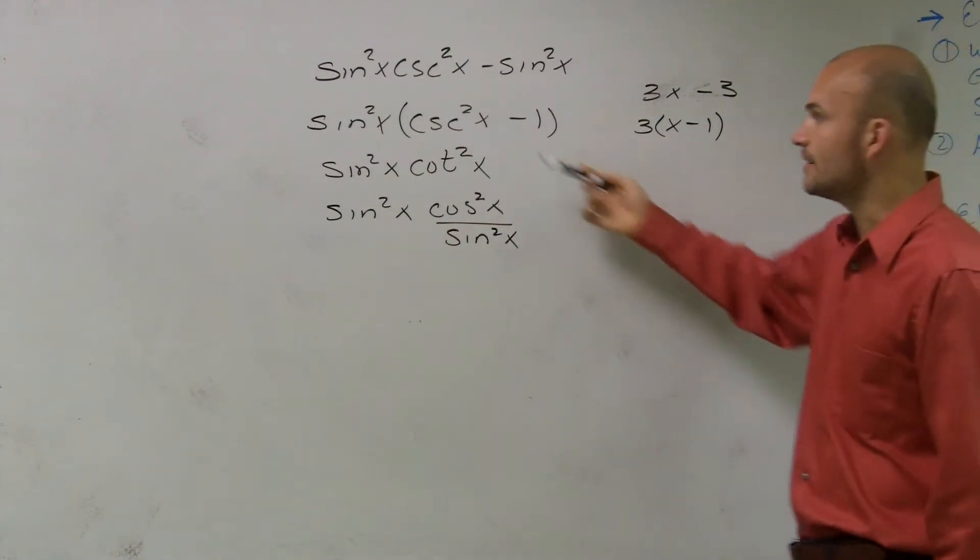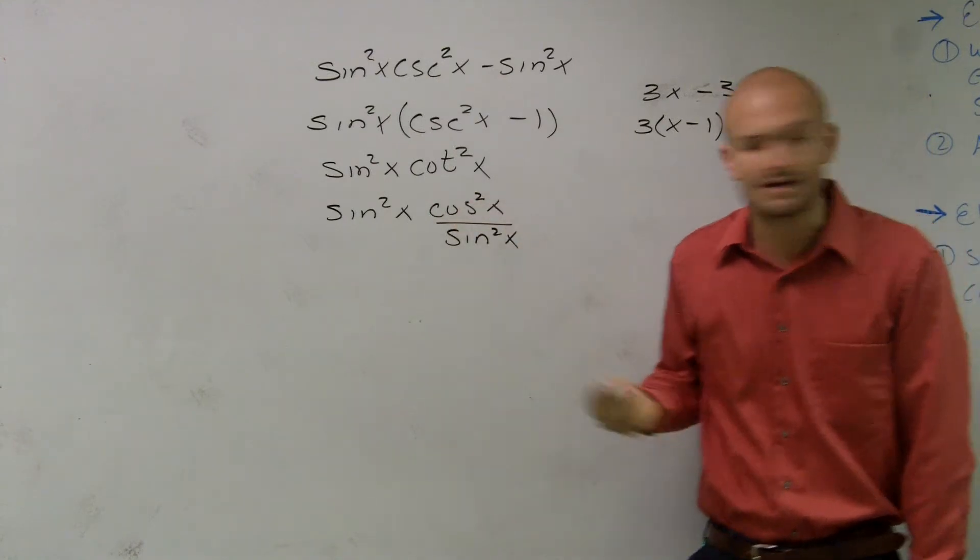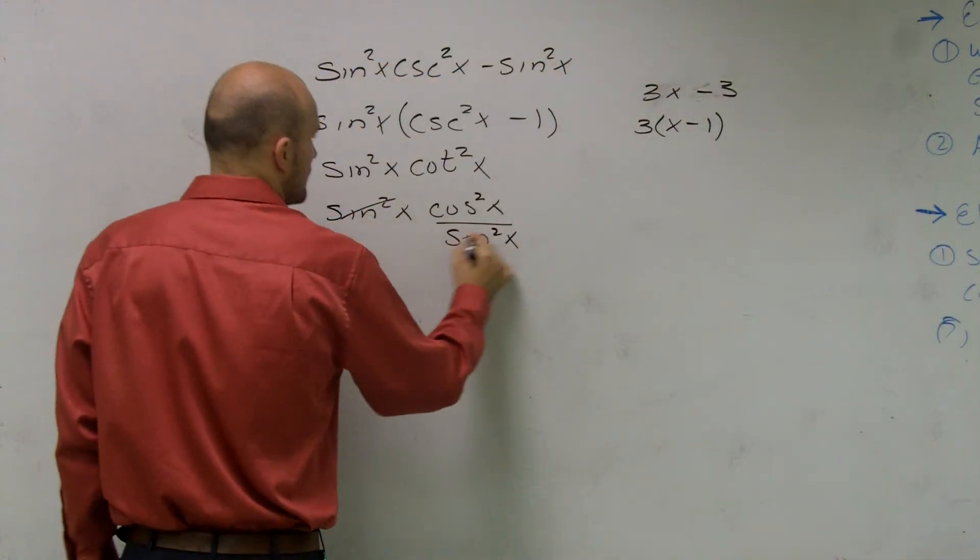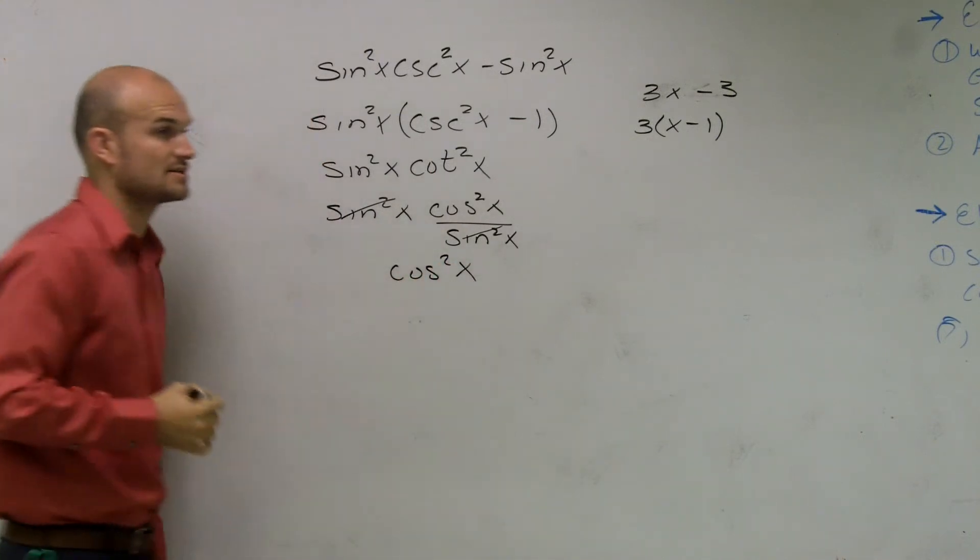How much farther can you go? So I don't want to stop here. I can keep working this. When I change this to cosine over sine, now those can cancel out, and what I'm simply left with is cosine squared of x.